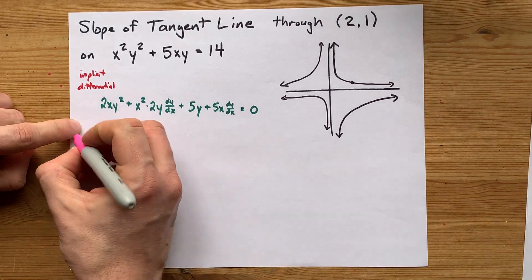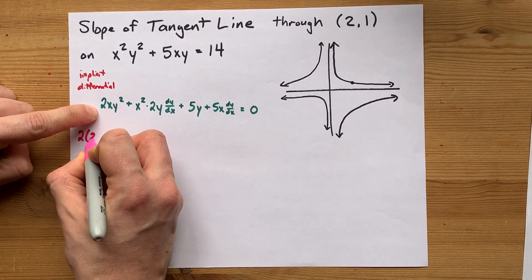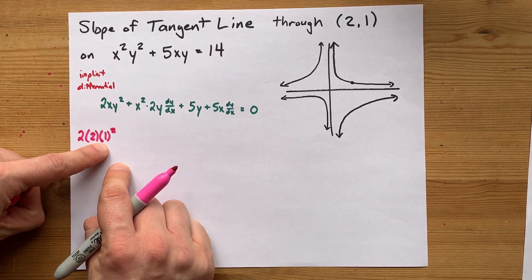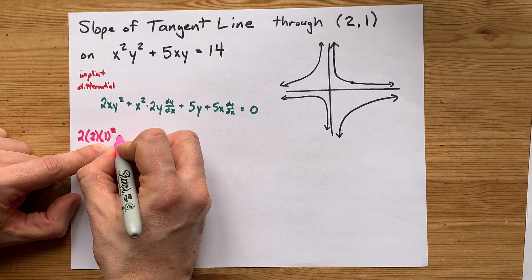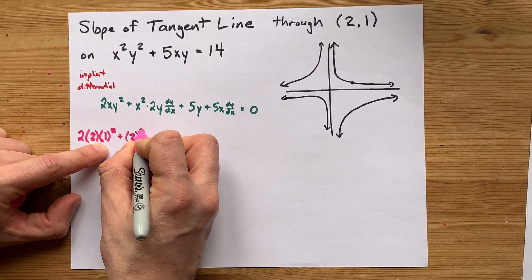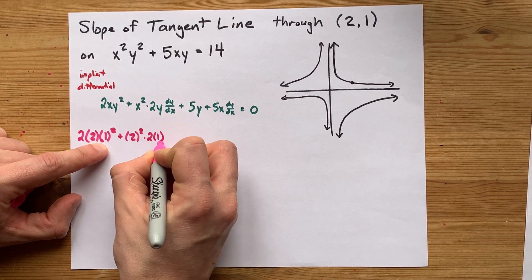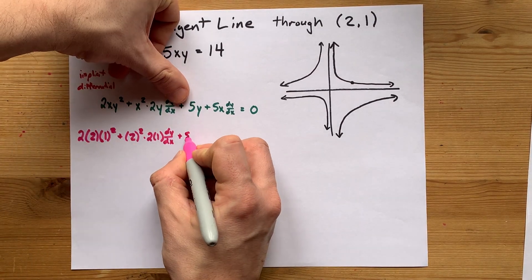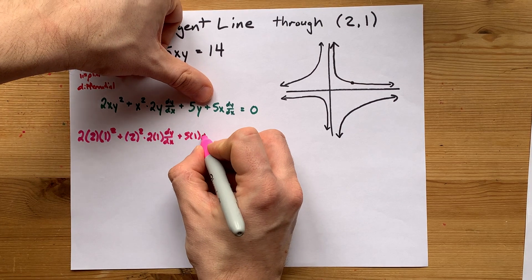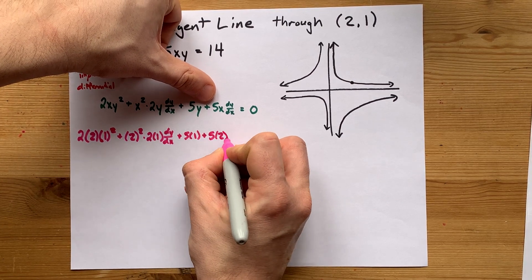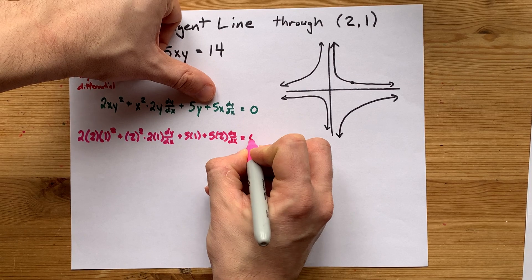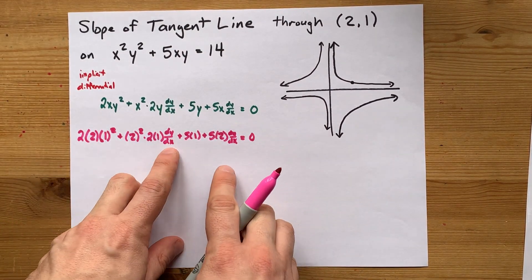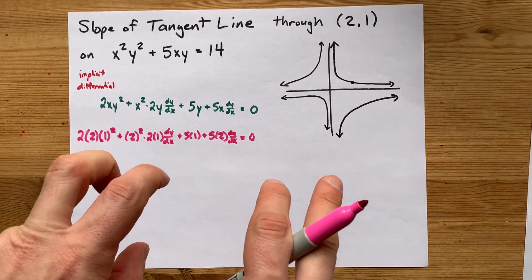I'll do that right now. That's 2 times x times y squared. See how the x's are now 2's and the y's are now 1's. Plus x squared times 2y. But this one has a dy by dx. Plus 5y plus 5x dy by dx equals 0. You can probably see that the only variable we have left is dy by dx. It's what we're going to solve for here.